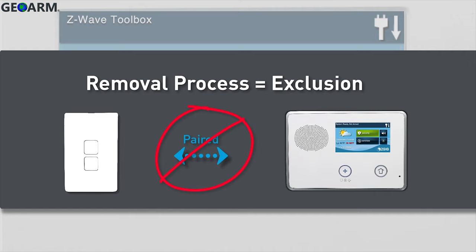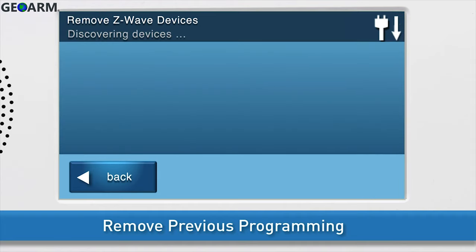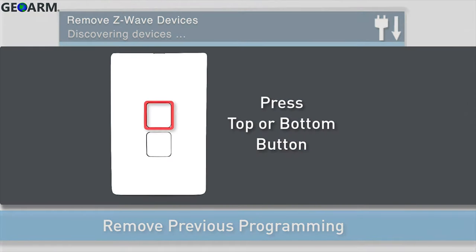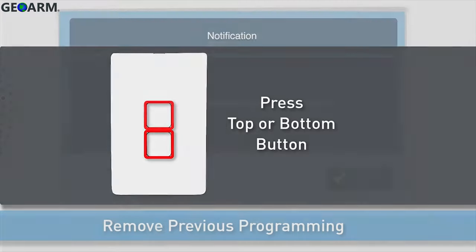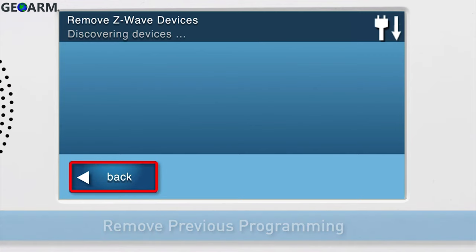To begin the removal process, select the Remove Devices button. The Remove Z-Wave Devices screen will appear. Press either the top or bottom button once. You will see a notification on screen that the device was removed. Press OK, then press Back.